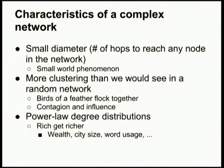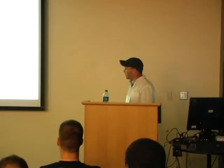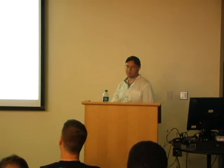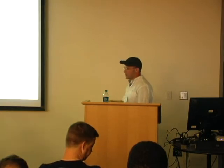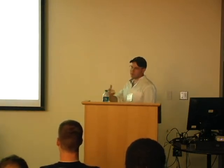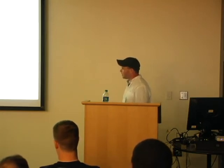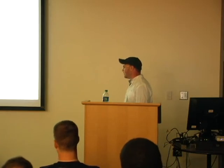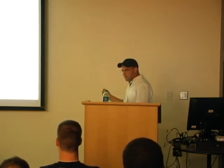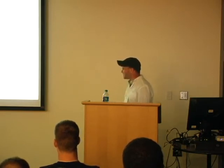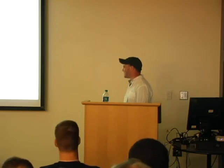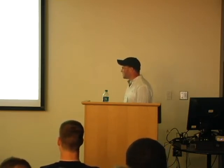The other thing we see are power law degree distributions, commonly known as the rich get richer. The idea is that if a node in the network has a lot of people pointing to it, it's very likely to get more and more people pointing to it, because it's easy to find that node — you can go to people that are already pointing to it. We see this everywhere in our natural world, and obviously it's what we complain about in an economic sense. It seems to be a naturally occurring phenomenon.